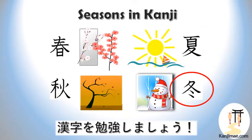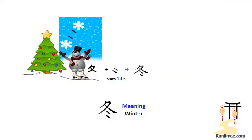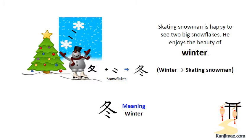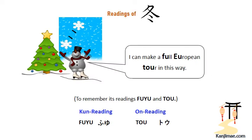And we have come to the last kanji for today, which means winter. There is a winter scenery here — the snowman is skating. Please see the moving or going radical next to the snowman's figure, plus two snowflakes, which together make the winter kanji. The skating snowman is happy to see two big snowflakes and enjoys the beauty of winter. He may say, 'I can make a full European tour in this way!' From this speech balloon, the first syllables of 'full European' — sounding like Fuyu — give us the kun reading, and Tou from the word 'tour' gives us the on reading of this kanji.